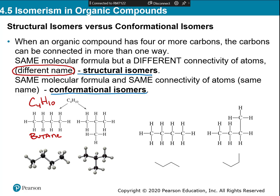Four carbons in a row is butane, but the one next to it has three carbons in a row and then a carbon hanging off of the middle. The longest carbon chain is three — that's propane. A single carbon group hanging off is a methyl, so this is 2-methylpropane. When I name these I get two different names — that is how I know they're structural isomers.